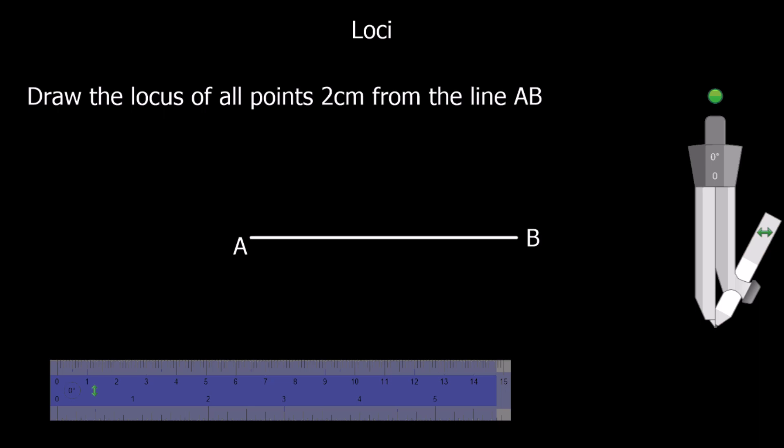This question says draw the locus of all points 2 cm from the line AB. So we've got to draw a line which is all the points 2 cm from the line AB.